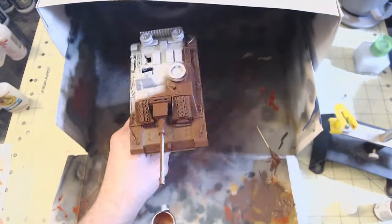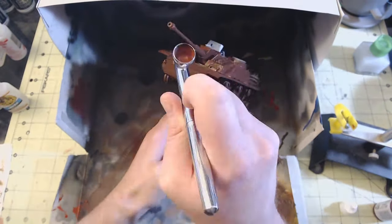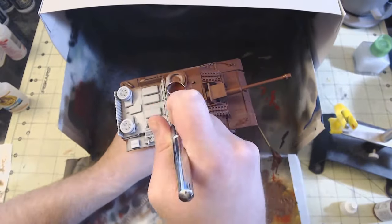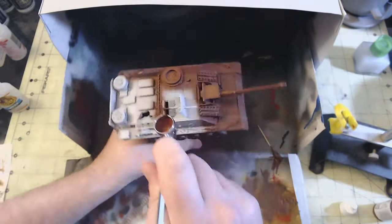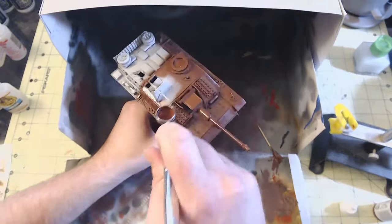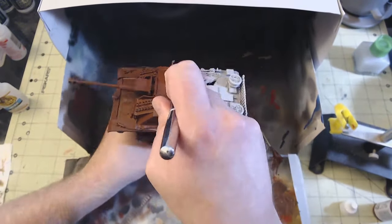I think you'll notice one thing I didn't do that I usually do is pre-shading all of the panel lines in black. There are a number of reasons as to why I skipped this step, not least being that the way I'll be layering on the paints and washes, I think it would have actually diminished if not nullified the effect.